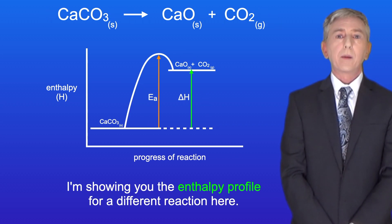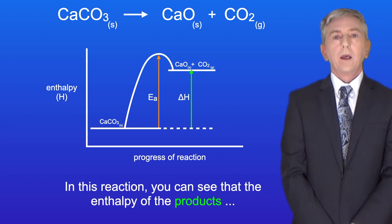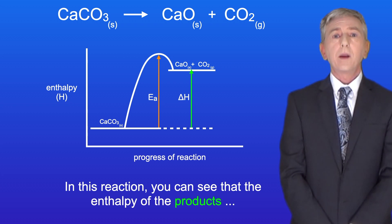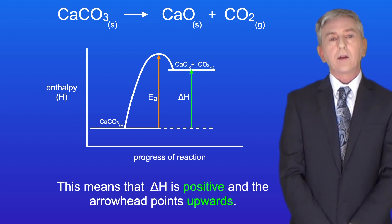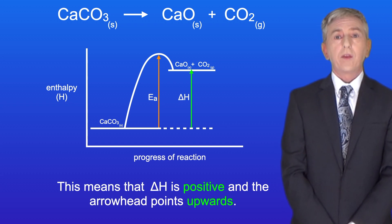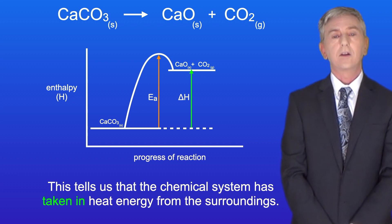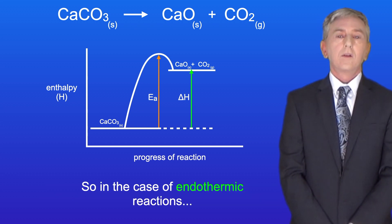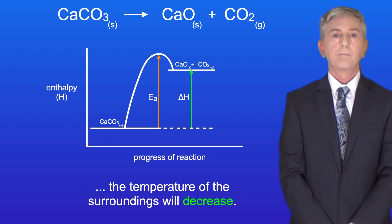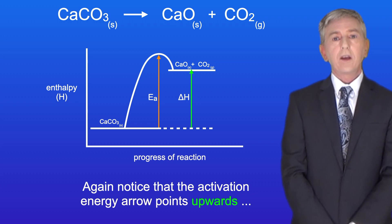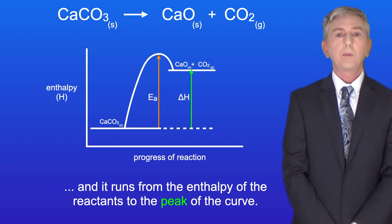I'm showing you the enthalpy profile for a different reaction here — this is an example of an endothermic reaction. In this reaction you can see that the enthalpy of the product is greater than the enthalpy of the reactants. This means that delta H is positive and the arrowhead points upwards. This tells us that the chemical system has taken in heat energy from the surroundings, so in the case of endothermic reactions the temperature of the surroundings will decrease. Again, notice that the activation energy arrow points upwards and runs from the enthalpy of the reactants to the peak of the curve.